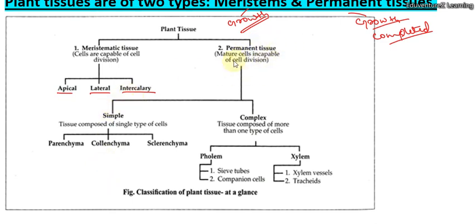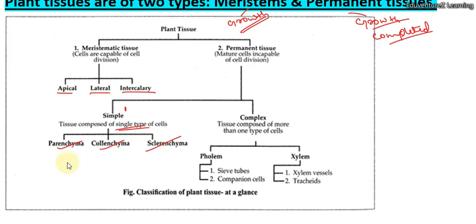Then we have permanent tissues. Permanent tissues are of two types: simple tissue and complex tissue. Simple means straightforward with no complications. Simple tissues are called simple because they are a single type of tissue — made from the same type of cell. These include parenchyma, colenchyma, and sclerenchyma.